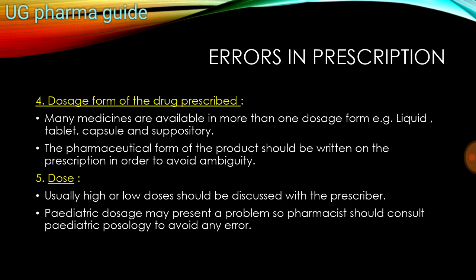Fourth is the dosage form of the drug prescribed. Many medicines are available in more than one dosage form, for example liquid, tablet, capsule, and suppository. The pharmaceutical form of the product should be written on the prescription in order to avoid ambiguity. For example, Azithromycin comes in tablet form as well as in syrup form for children.